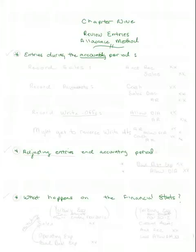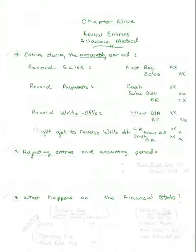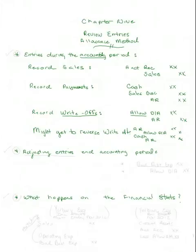Let's start with the entries that are made during the period. During the accounting period, you'll make entries to record sales, debiting accounts receivable and recording sales. You'll make entries to record payments — sometimes they'll take discounts. You'll make entries to record write-offs: they debit the allowance account and credit accounts receivable under the allowance method. And you might be lucky enough to reverse a write-off — somebody changes their mind and actually pays you after you've given up on collecting.